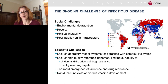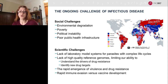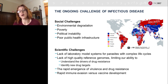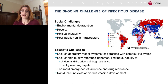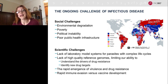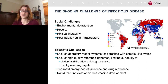Scientific challenges include lack of laboratory model systems for parasites with complex life cycles, but also things like the lack of high quality reference genomes, which limits our ability to understand the drivers of drug resistance and to identify new targets. It can also make it challenging to understand how parasites or other vectors of infectious disease are able to evade the immune system. All of this is happening in the context of the rapid emergence of virulence and drug resistance. I wanted to share how some new technology is starting to help us make a dent in at least some of these scientific challenges.